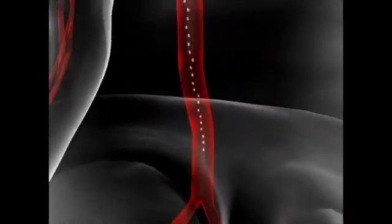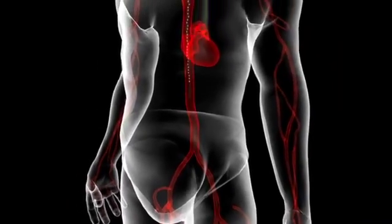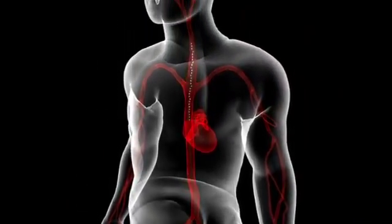Transported in the circulatory system, tachyzoites spread to other tissues and organs of the host, such as muscles and the brain.